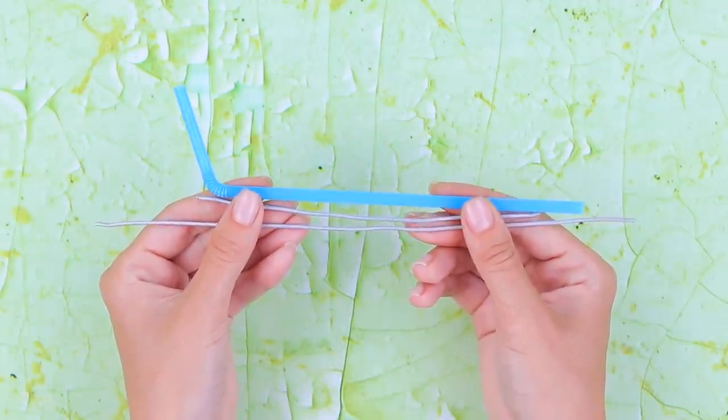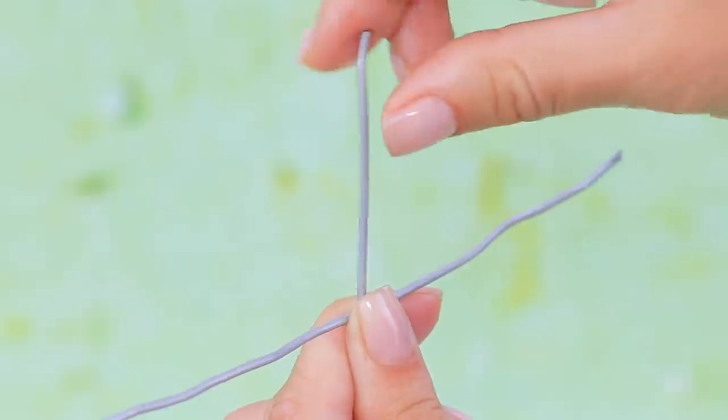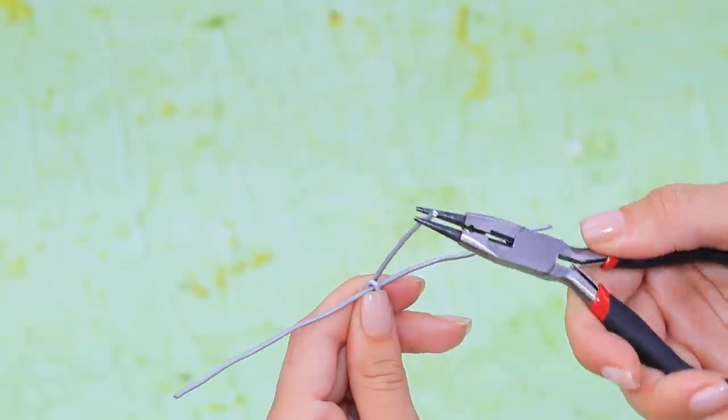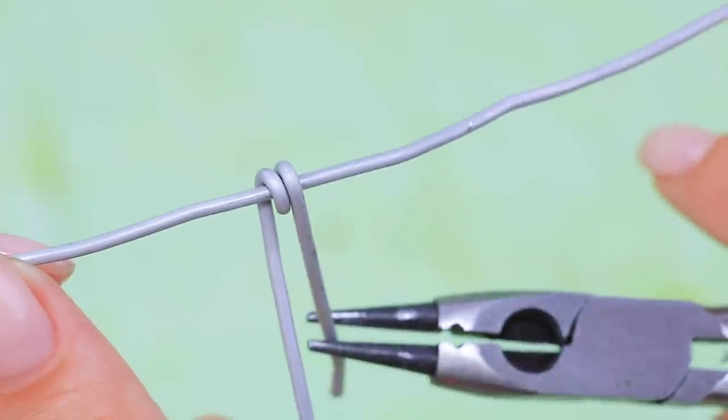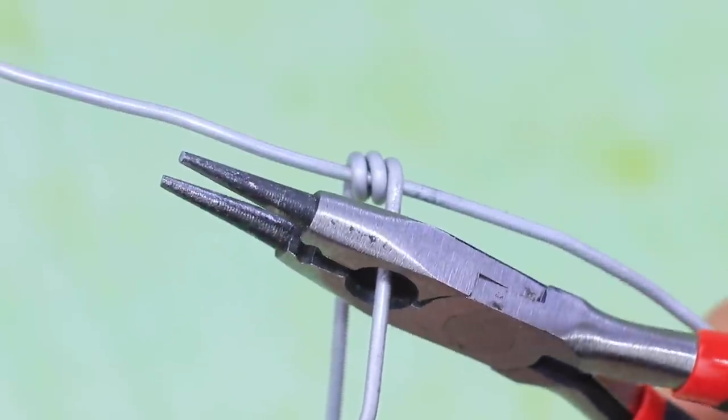Let's make an IV stand! Take a straw and two pieces of wire. Wrap one around the other and remove the excess with wire cutters.